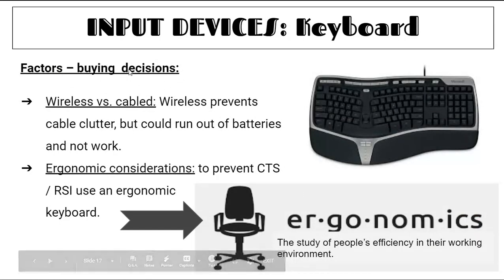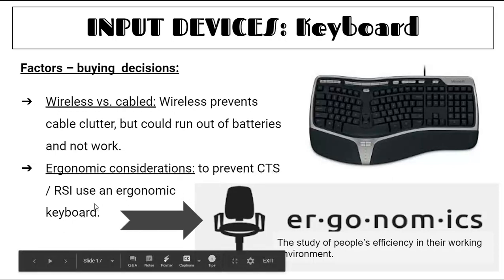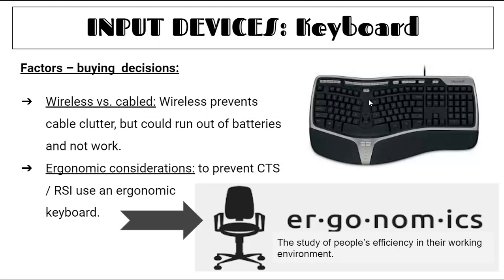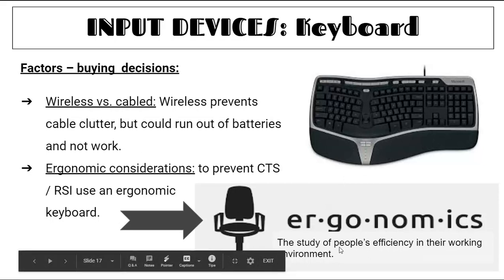When buying a keyboard, consider: wireless versus cabled — wireless prevents cable clutter but batteries can run out. Ergonomic considerations help prevent carpal tunnel syndrome or repetitive strain injury. An ergonomic keyboard has keys at an angle, spaced out, with large wrist pads at the bottom. Ergonomics is the study of people's efficiency in their working environment to prevent injuries.